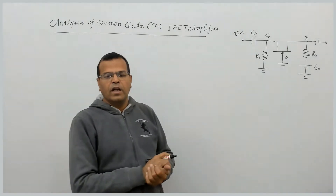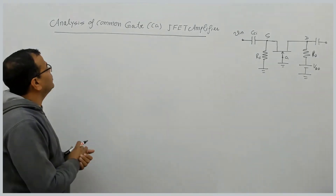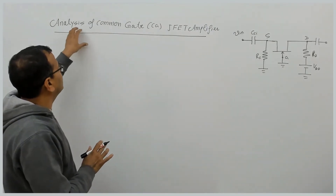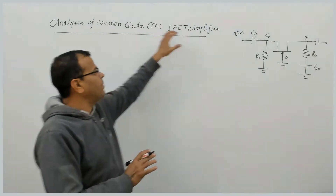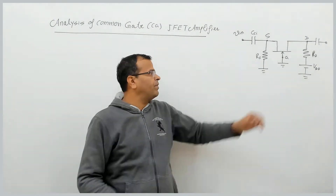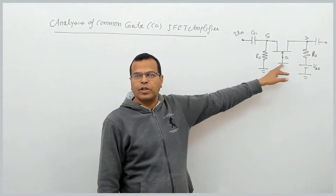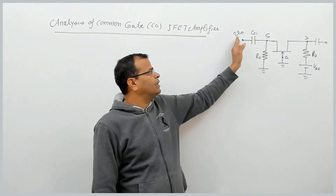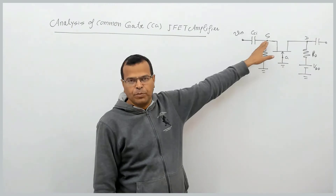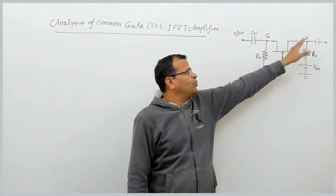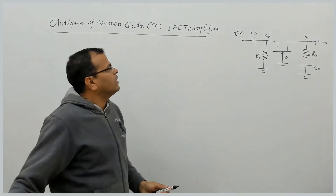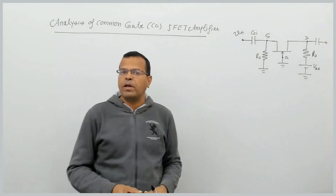The last topic of JFET amplifier analysis is the small signal analysis of the common gate amplifier. In a common gate JFET-based amplifier, the gate terminal is grounded, the input signal is applied to the source terminal — the source is the input terminal now — and the output is taken from the drain terminal.